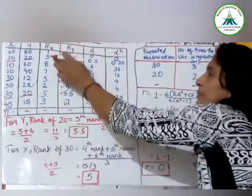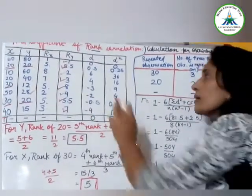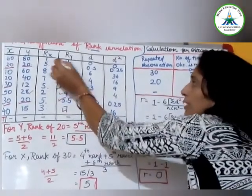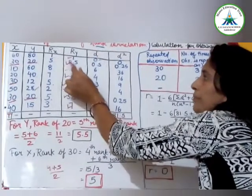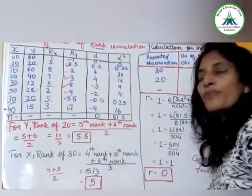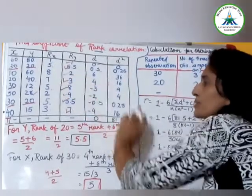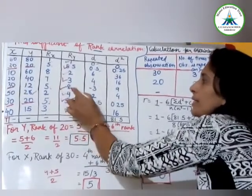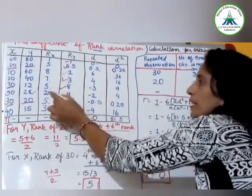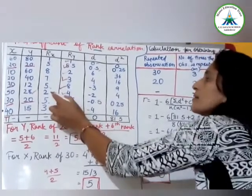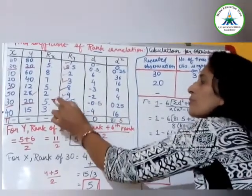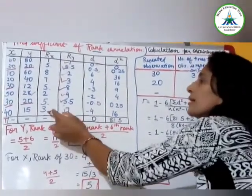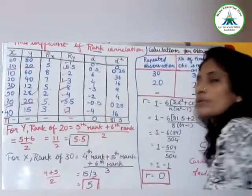This is denoted by d. First, 1 minus 1 is 0. 5 minus 0.5. Then 8 minus 2 is 6. 7 minus 4 is 3. 7 minus 3 is 4. 5 minus 8 is minus 3. 2 minus 4 is minus 2. 5 minus 5.5 is minus 0.5. Then 3 minus 7 is minus 4.